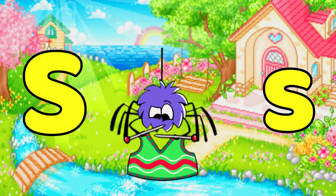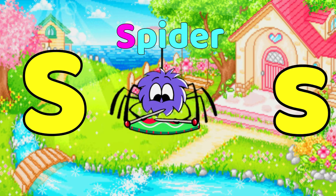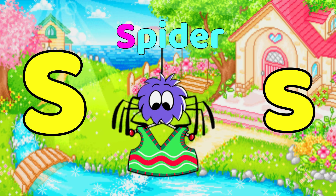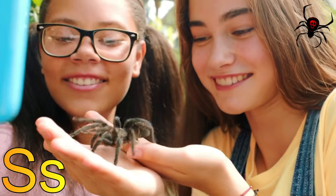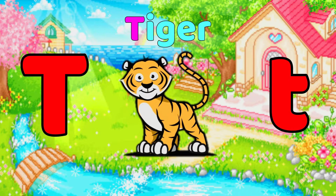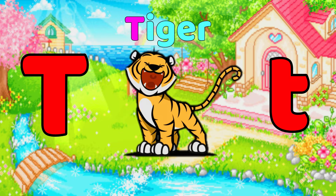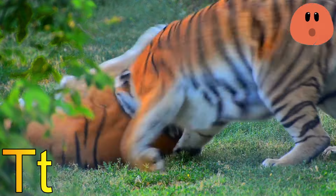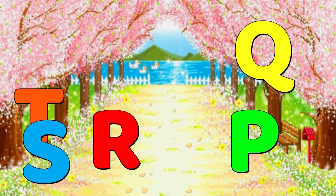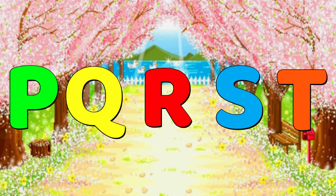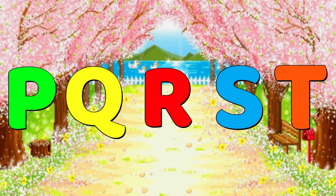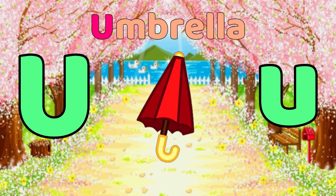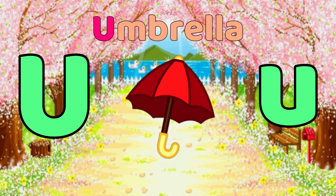S is for spider, s-s-spider. T is for tiger, t-t-tiger. U is for umbrella, u-u-umbrella.